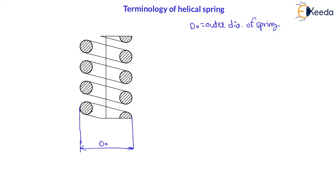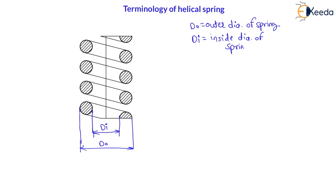Then the inside diameter — there will be a dI. There will be an inside diameter also. This inside diameter is called dI. This is called inside diameter of the spring coil. We can say spring coil also — it is the diameter of spring coils.